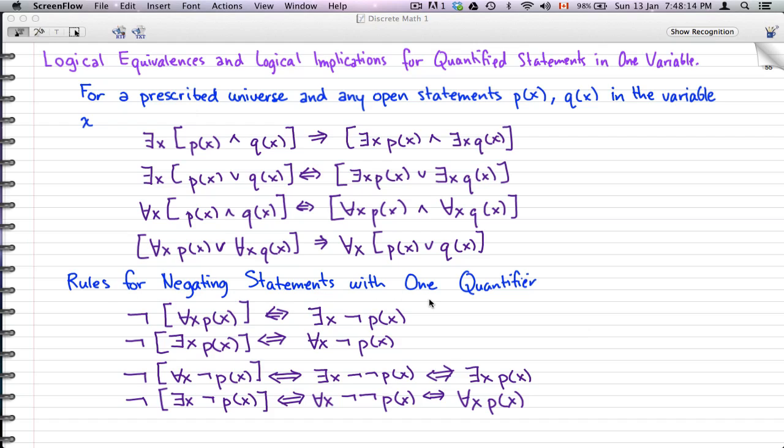This is something important that you need to know. When we negate exists x p(x), that is logically equivalent to for all x [not p(x)]. And when we negate for all x p(x), that is also logically equivalent to exists x [not p(x)]. Similarly, if we have not [for all x not p(x)], that is logically equivalent to exists x [not not p(x)], which is logically equivalent to exists x p(x). And we have the same for not [exists x not p(x)], which equals for all x p(x).